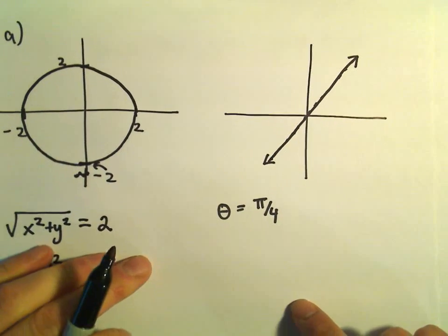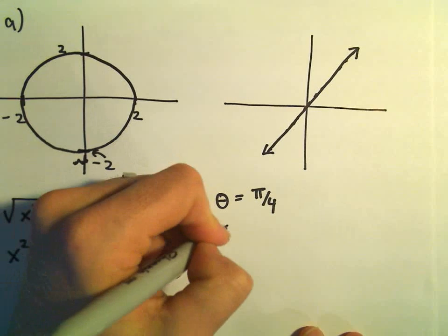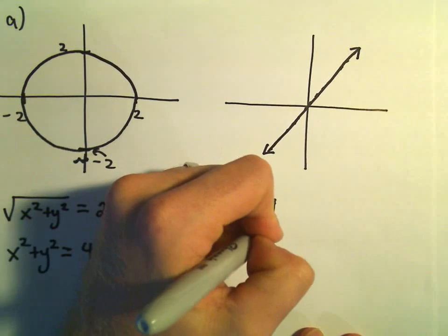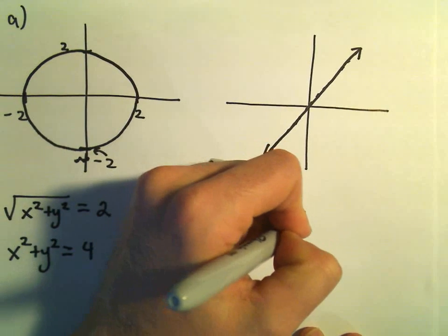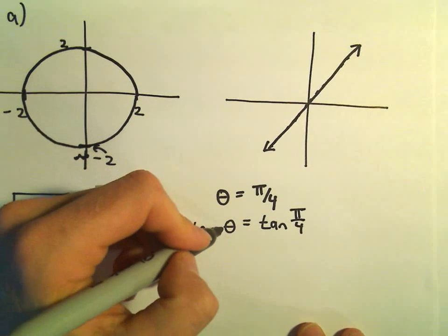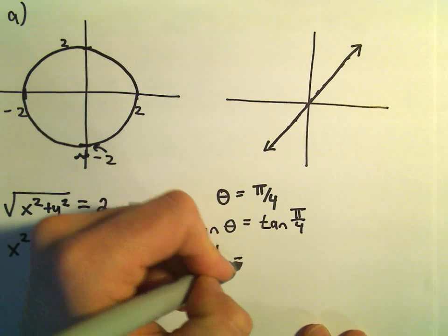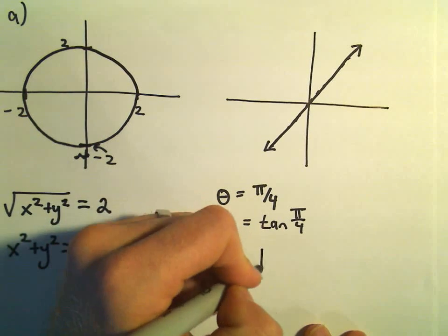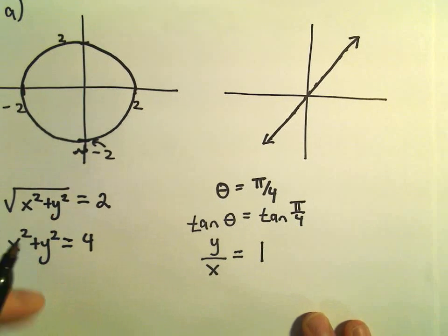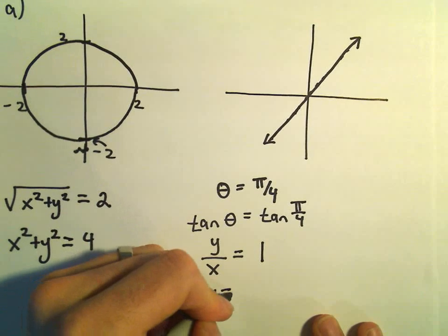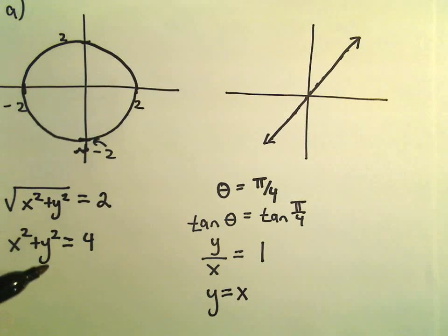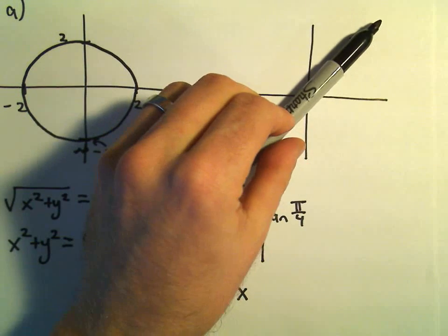And again, the way that you can see that is if you take tangent of both sides, so tangent of theta equals tangent of pi over 4. Well, tangent of theta, we've seen that we can write that as y over x. Tangent of pi over 4, that's just equal to 1. So if you multiply both sides, you simply get the equation y equals x. And again, that's what y equals x looks like.